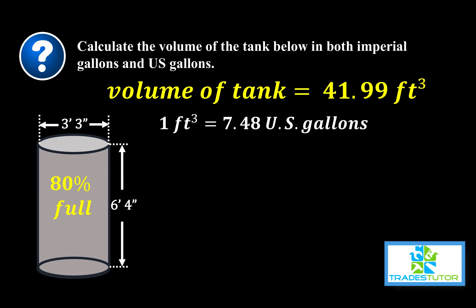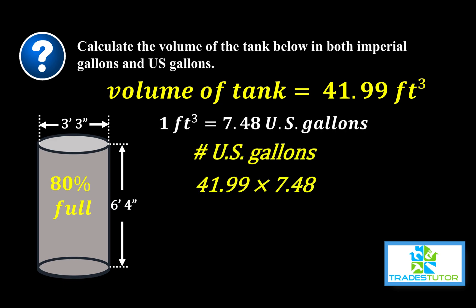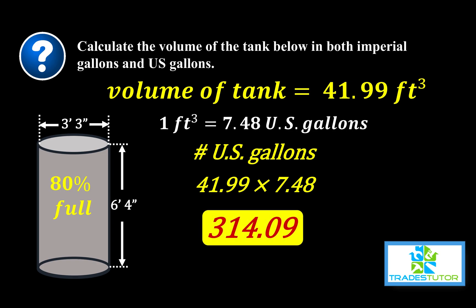We can do the same thing for U.S. gallons. Take 41.99 cubic feet and multiply by 7.48, and we get 314.09 U.S. gallons. That's it — imperial gallons, U.S. gallons, and cubic feet, all with water.